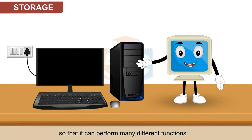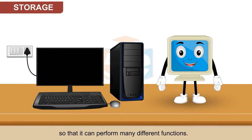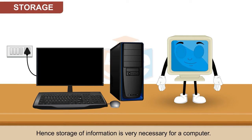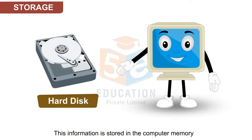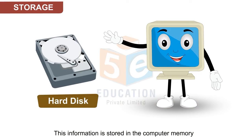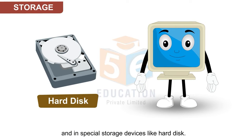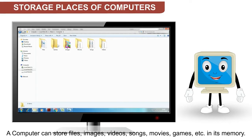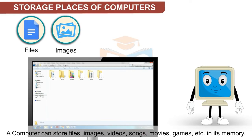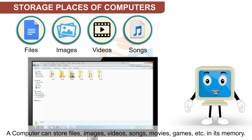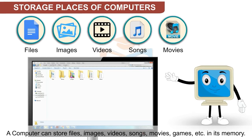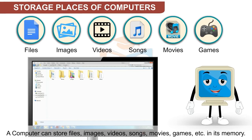A computer needs to store a lot of information so that it can perform many different functions. Hence, storage of information is very necessary for a computer. This information is stored in the computer memory and in special storage devices like hard disk. A computer can store files, images, videos, songs, movies, games etc. in its memory.